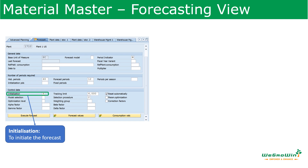How to initiate the forecast, what is the tracking limit, what is the model selection — those kinds of things are in the control data. The initialization indicator determines whether the forecast has to be initiated by the system automatically or it has to be initiated manually — that is what is decided by the initialization indicator field.